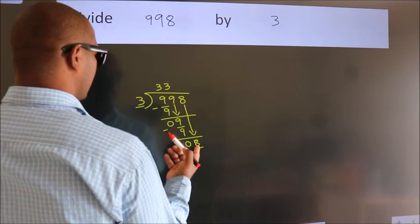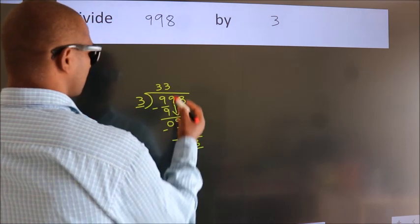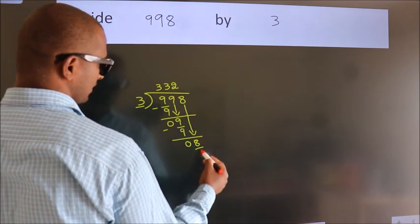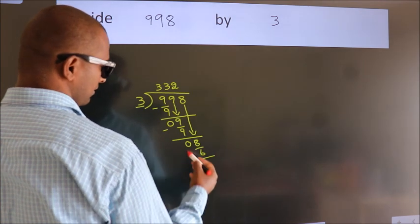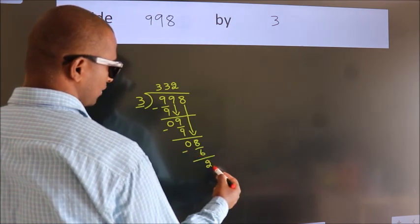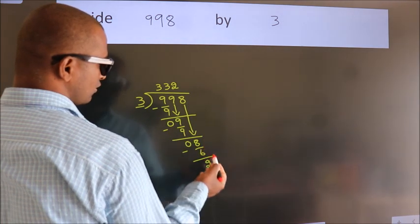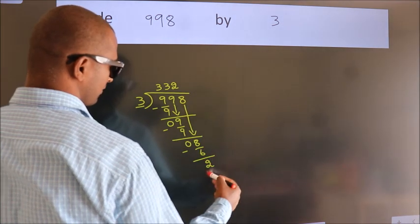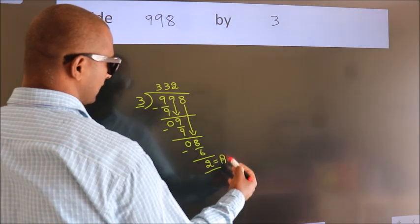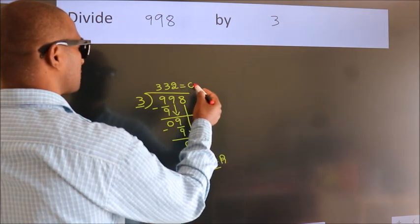A number close to eight in three table is three twos, six. Now we subtract, we get two. After this, no more numbers to bring down, so we stop here. This is our remainder, this is our quotient.